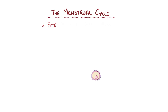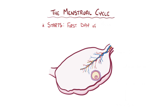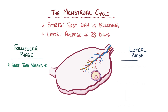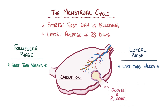The menstrual cycle starts on the first day of menstrual bleeding and lasts 28 days on average. Assuming a 28-day cycle, the follicular phase makes up the first two weeks, and the luteal phase the last two weeks. These two phases are separated by ovulation, which is when the follicle ruptures and releases an oocyte that is ready to be fertilised. This usually occurs on day 14 of a 28-day cycle.